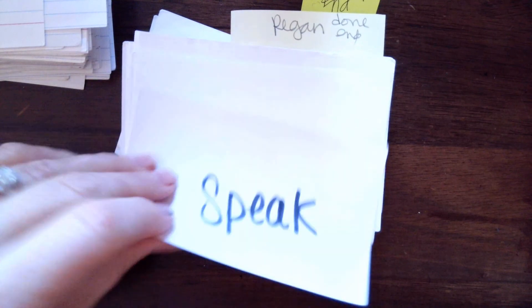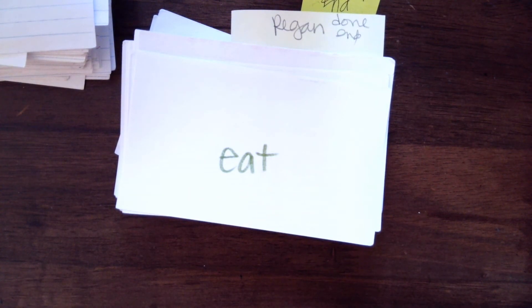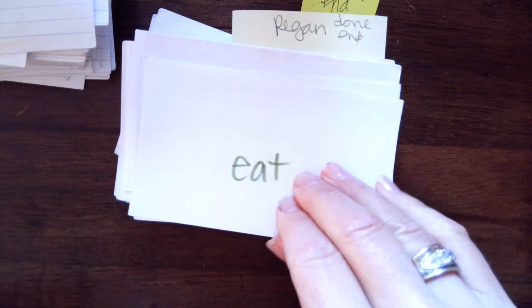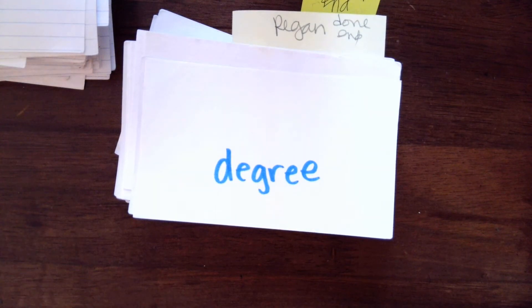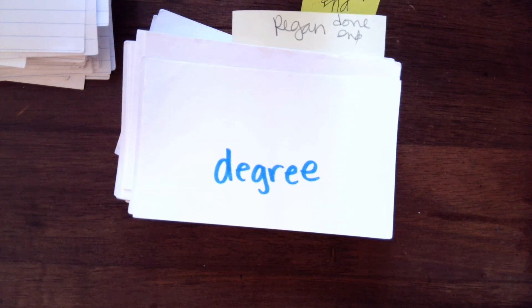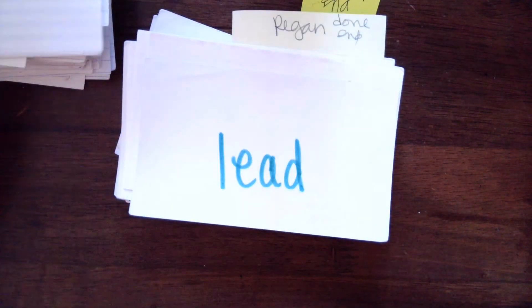Yeah, you got it. EA makes e — yeah, you got it. EA makes e. EE makes e — gre, EE degree — degree.